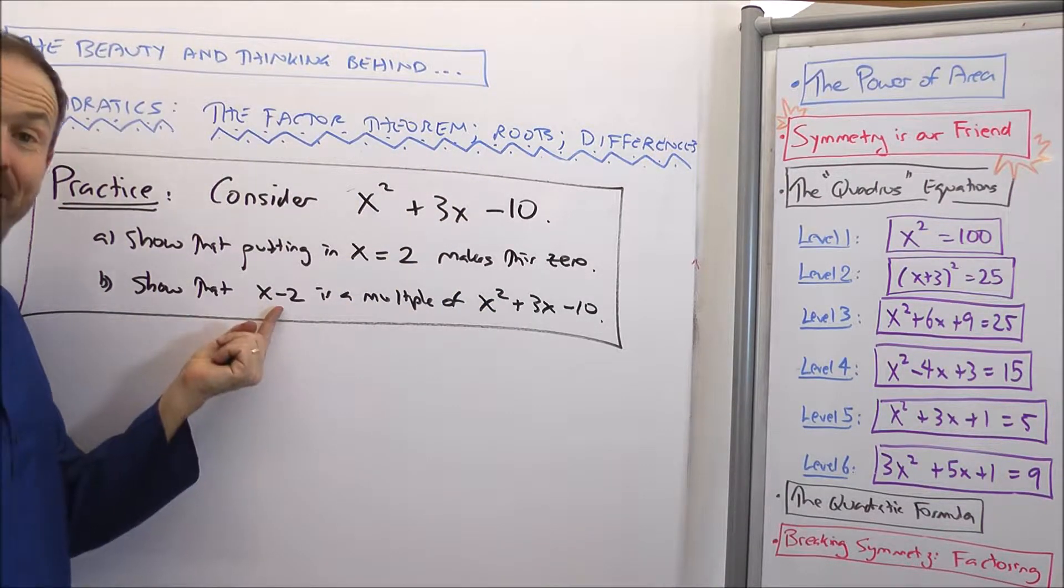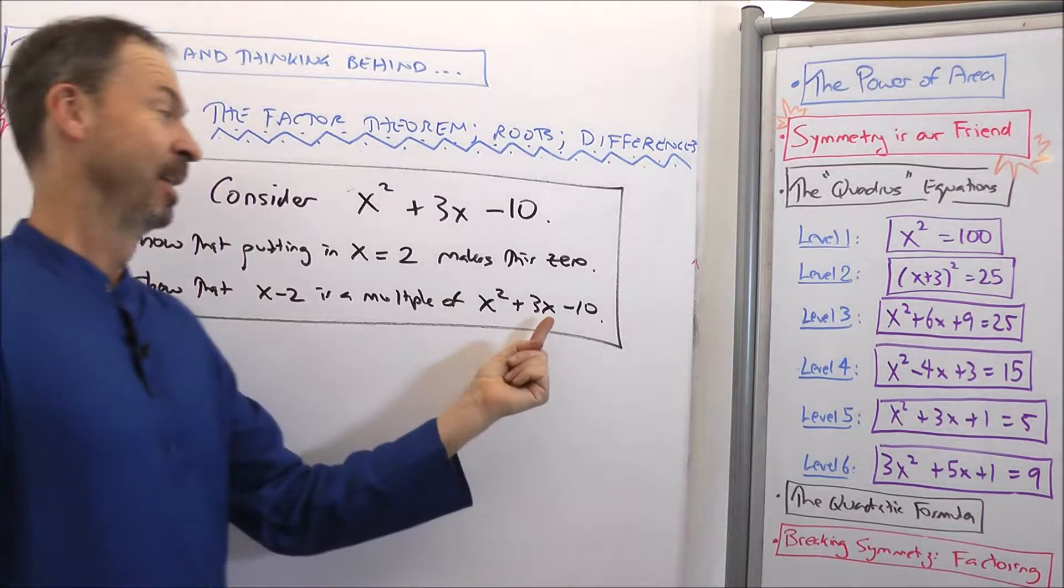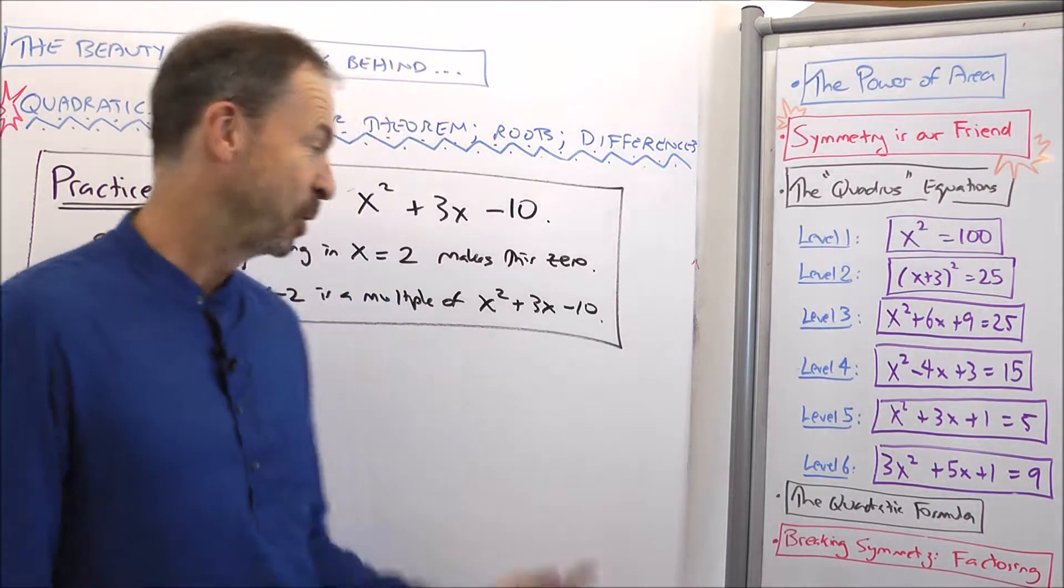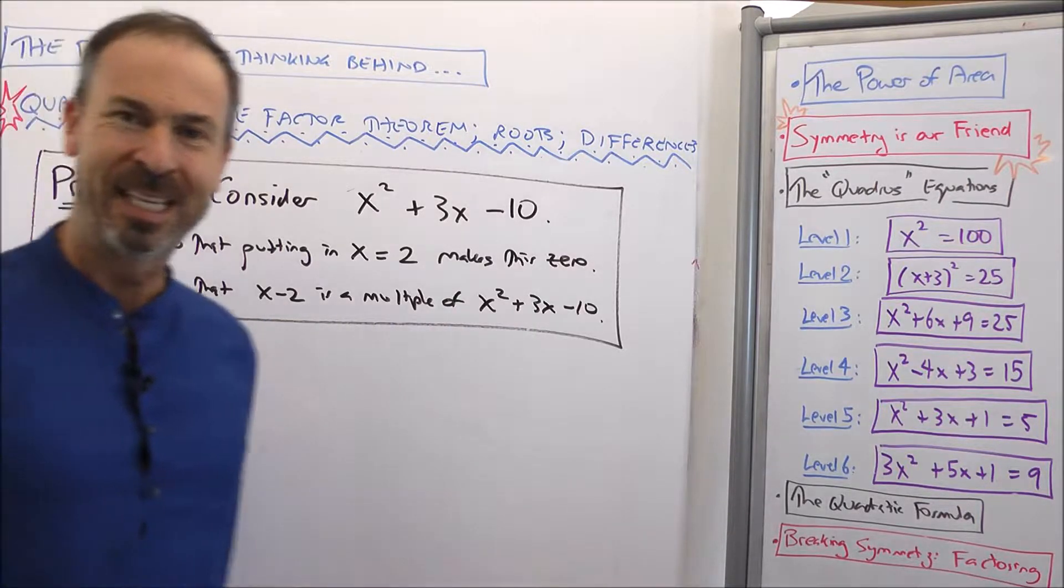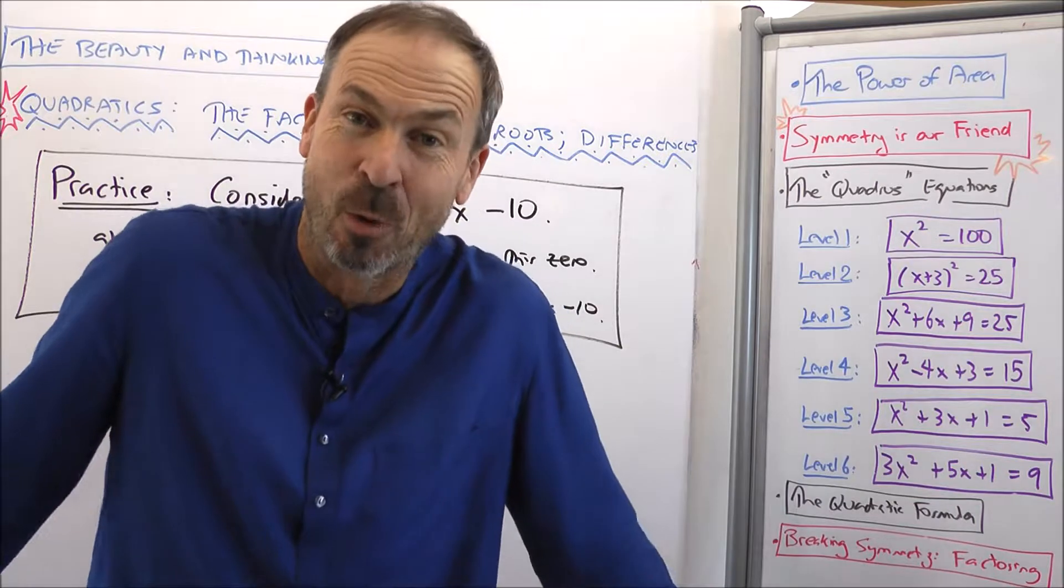let us show that actually x minus 2 then is a factor of x² + 3x - 10. That you can rewrite x² + 3x - 10 as a multiple of x minus 2. Give it a try, and I'll actually show you my work too, right afterwards.